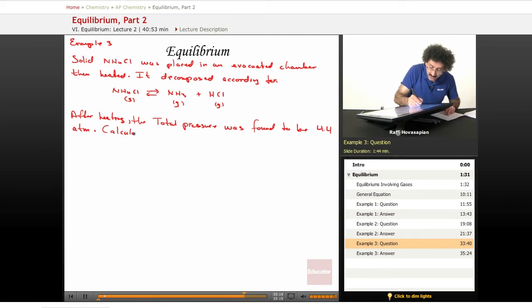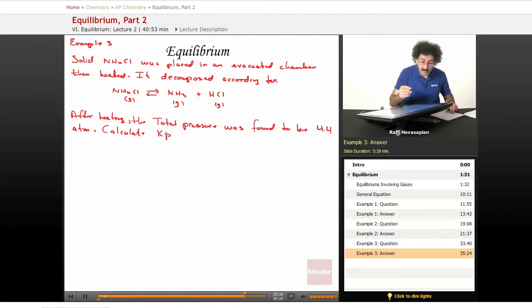Our task is to calculate the Kp, the equilibrium constant with respect to pressures. Well, let's write out the equilibrium expression first. It's always a great thing to do. Write everything out. Write out the equilibrium expression, write out the ice chart, and then see where you go from there.